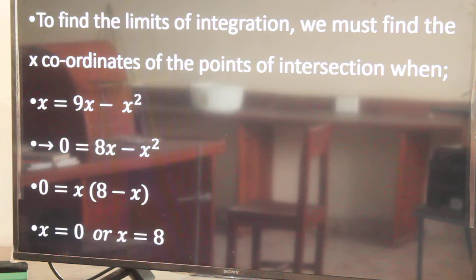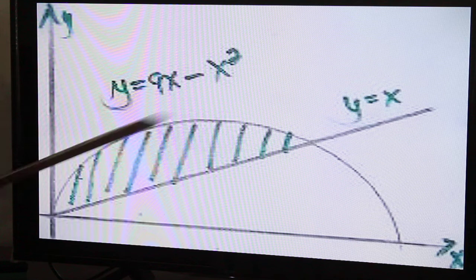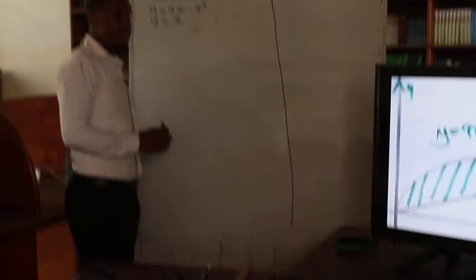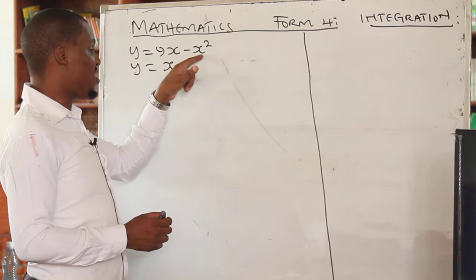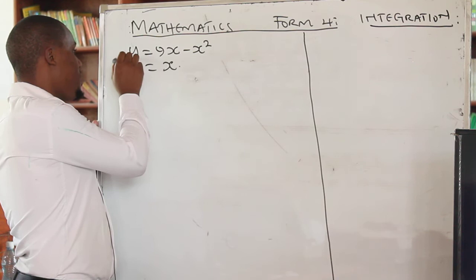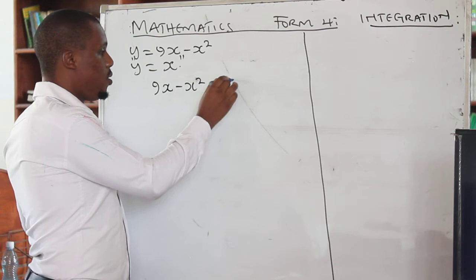To find the limit of integration, you must find the x-coordinates at the points of intersection. You need to find the points where the straight line intersects with the curve. At the point of intersection, the two equations are equal. So we equate them: 9x − x² = x.